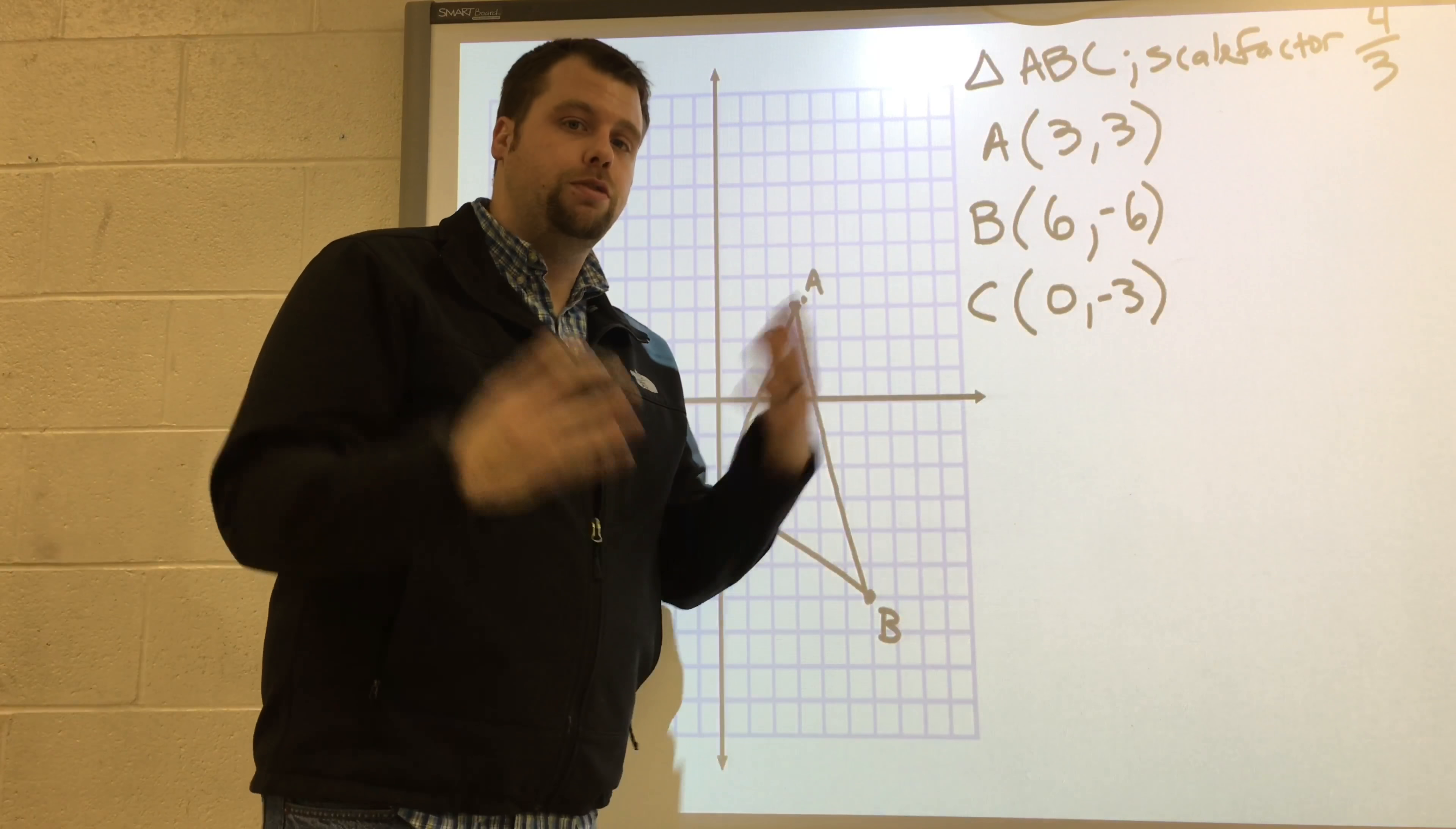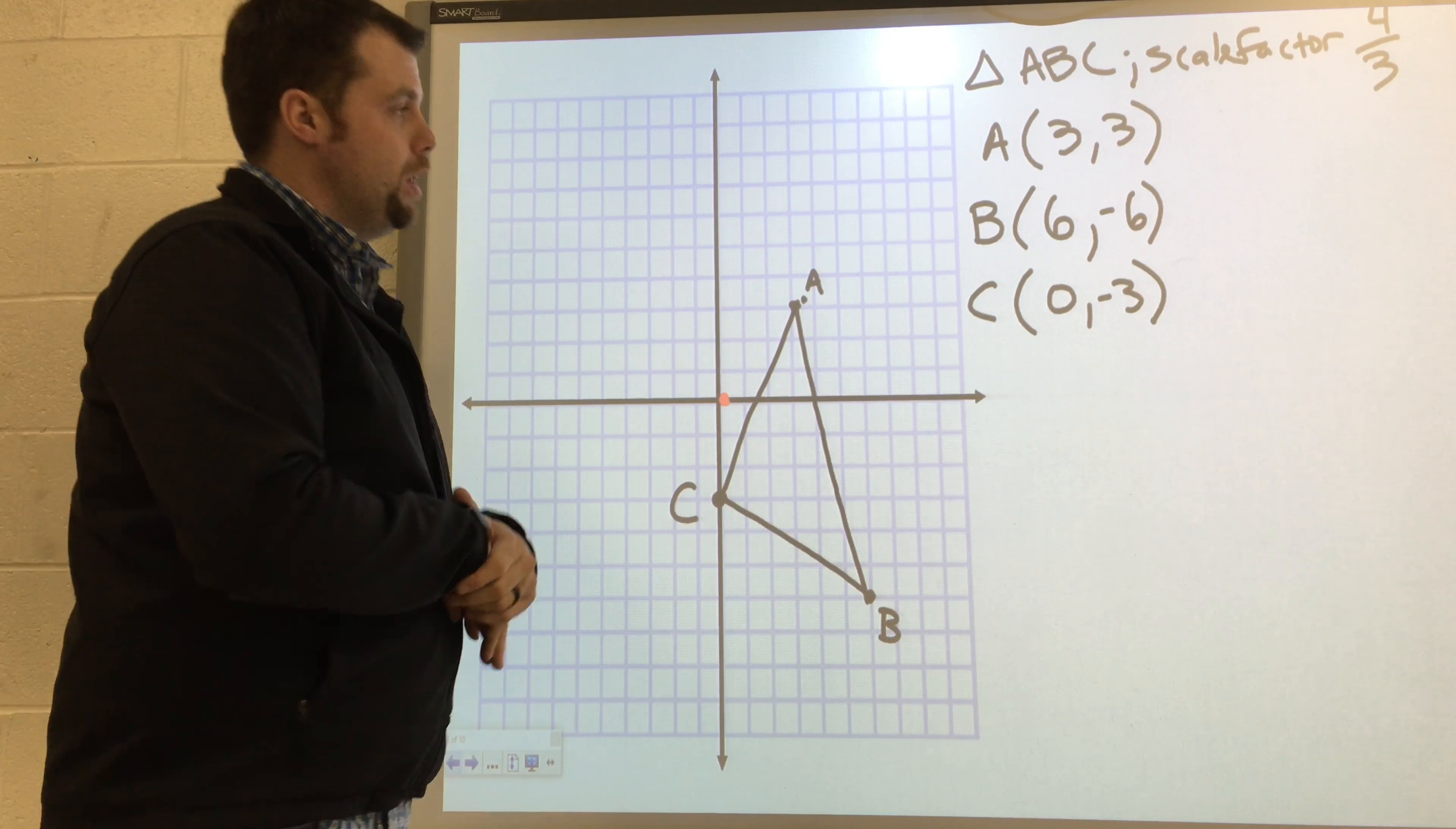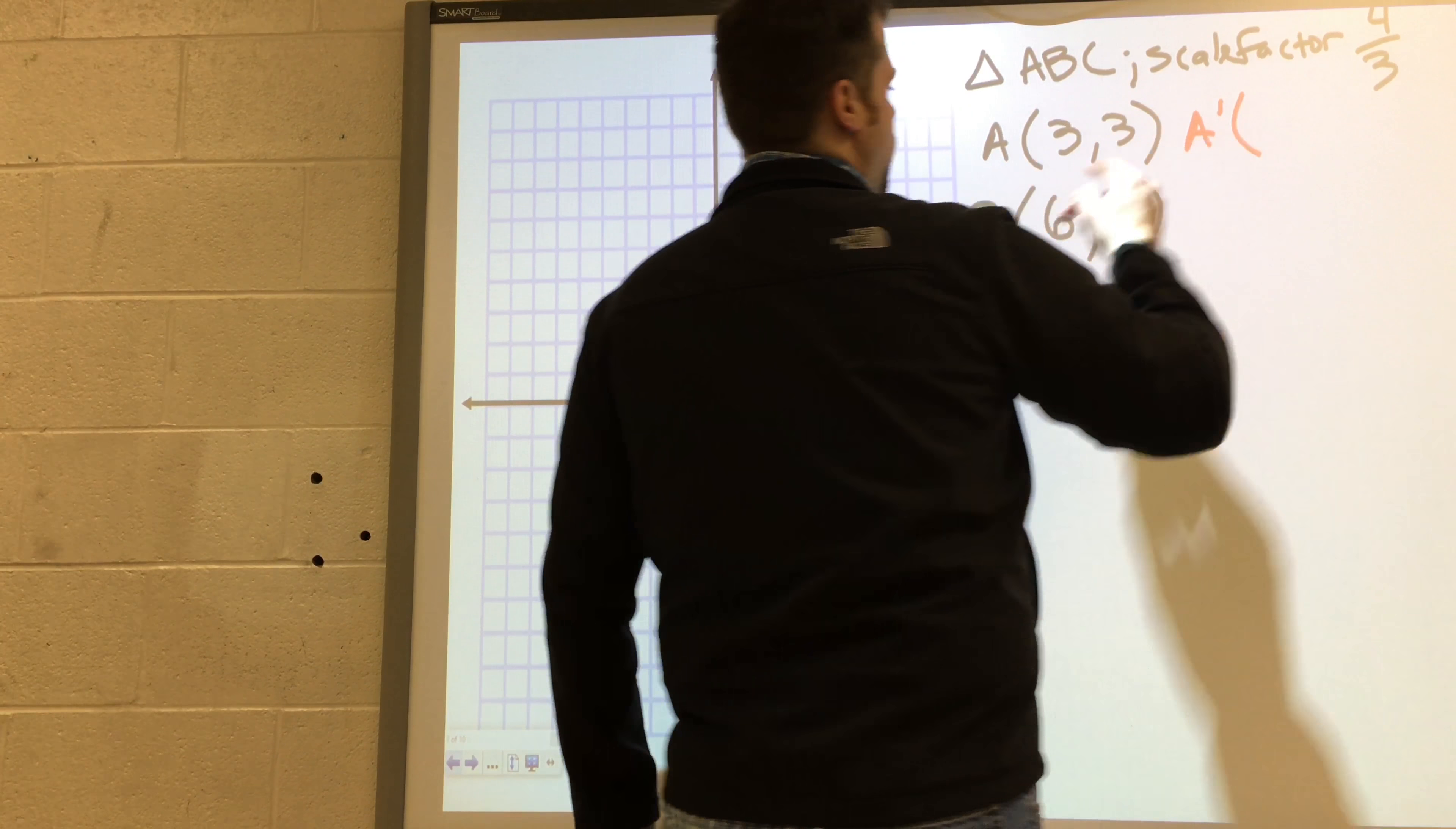So if it has a scale factor of four-thirds, that's a little bit bigger than one. This is going to be an enlargement. Now the thing is when you're doing an enlargement on a coordinate plane, the center is always the origin, zero, zero. But here's what I need to do. I need to take four-thirds. And if I want to enlarge by a scale factor of four-thirds, I multiply everything by four-thirds. So I take three and I multiply by four-thirds.